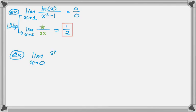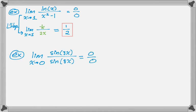The next example is the limit as x approaches 0 of sin(3x) over sin(8x). You might have learned how to evaluate this using the fact that the limit as x approaches 0 of sin(x)/x is 1, with various multiplications and regroupings. But let's try L'Hôpital's Rule. Direct substitution: sin(0) is 0, so we get sin(0) over sin(0), which is 0 over 0 — a L'Hôpital's situation.